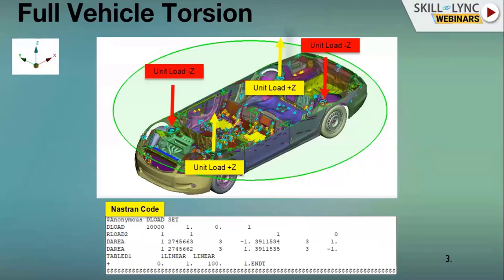A fundamental load case for a full vehicle is the torsion load case. In normal mode analysis, it is difficult to identify the torsion mode by animation alone, as three or four modes may appear similar. To reduce this ambiguity, a torsion load case is applied using SOL 111 (modal frequency response analysis), where a unit torsion load is applied at shock tower attachment locations or subframe attachment locations.